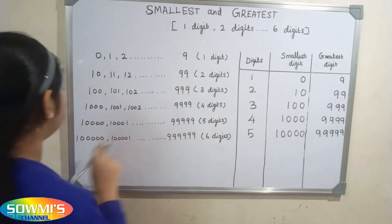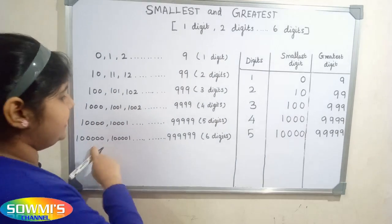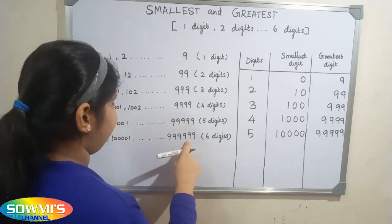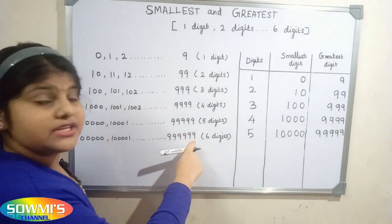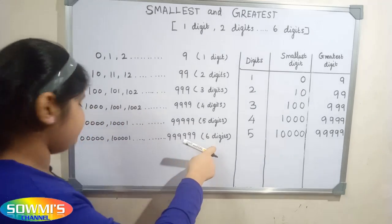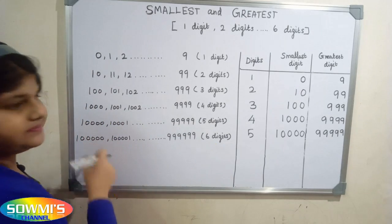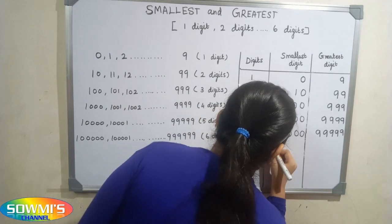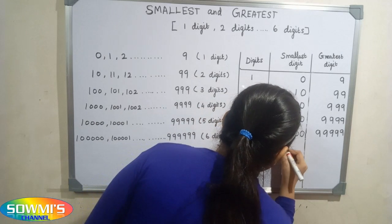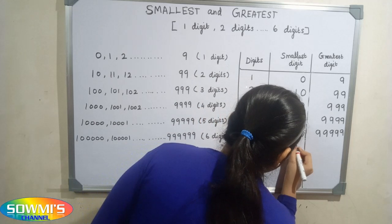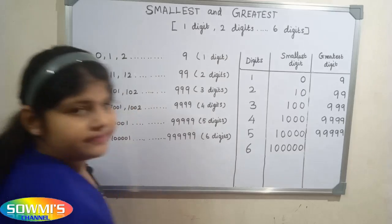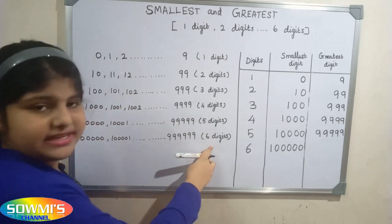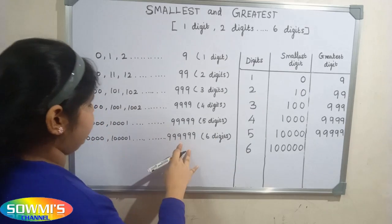Six digit number starts with one hundred thousand and ends in nine hundred and ninety-nine thousand nine hundred and ninety-nine. The smallest six digit number is one hundred thousand.